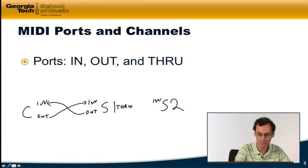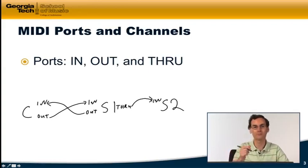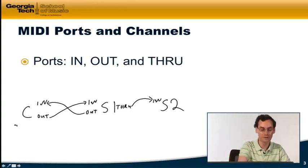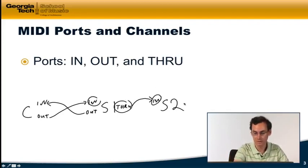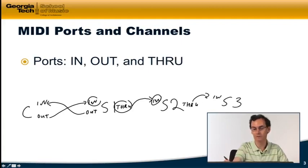So what I do instead is hook up the THRU port from the first sound module to the IN port of the second sound module. And what that THRU port does is basically just replicate whatever's coming into that sound module and send it back out its THRU port. So that way the controller is going from its OUT to the IN here, and then it's going from the THRU over to the IN here. And then I could use this THRU to go to another device and so on and so forth. That's why we have these different ports.